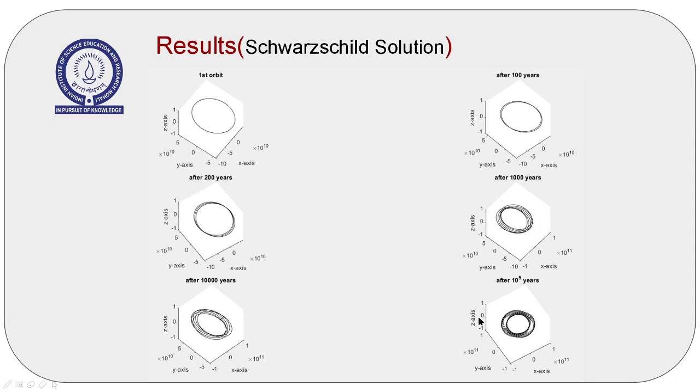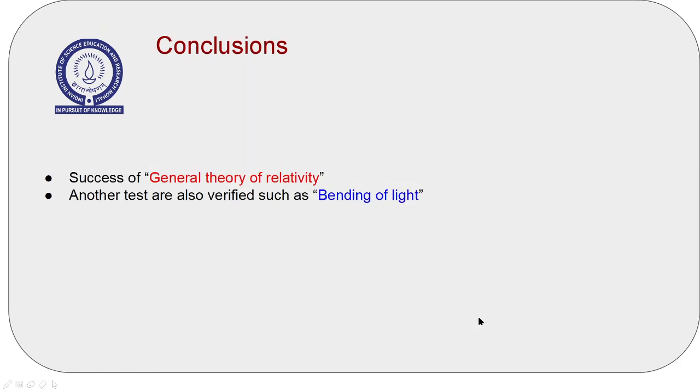Till now, general theory of relativity has been incredibly successful. There are various other tests suggested by Einstein himself, such as bending of light, perihelion precession of Mercury, and others which can be explained by general theory of relativity.